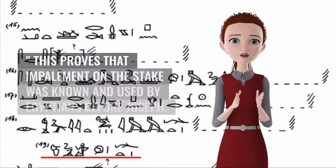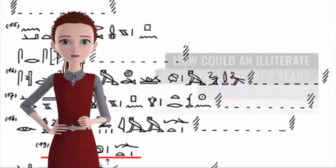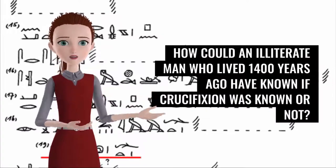This proves that impalement on the stake was known and used by Egyptians before Joseph. How could an illiterate man who lived 1,400 years ago have known if crucifixion was known or not?